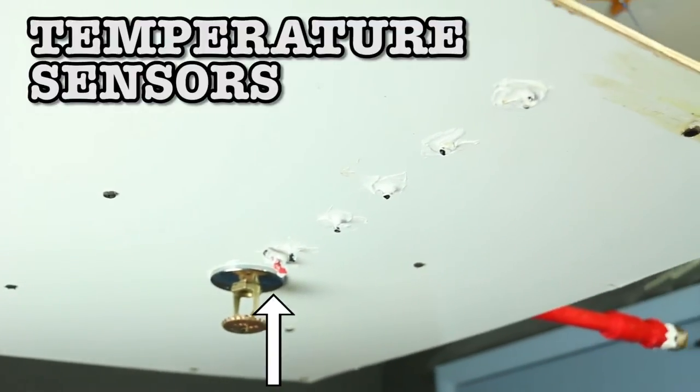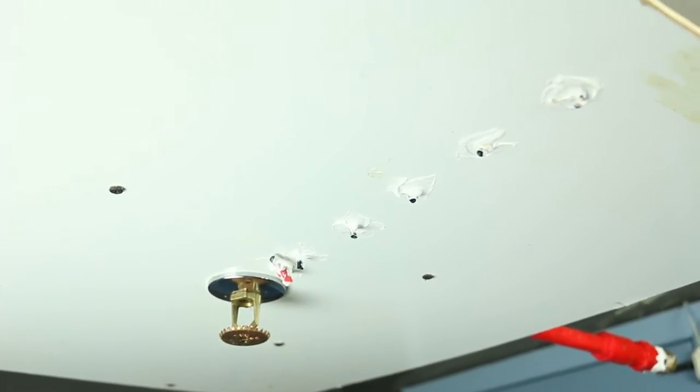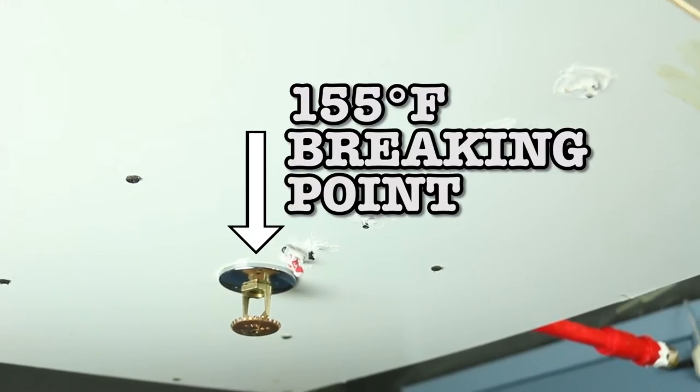We also attached temperature sensors to the board, just so we could keep an eye on how close we were getting to the sprinkler head's 155 degree Fahrenheit threshold.